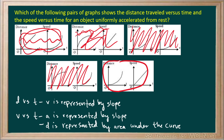On the distance versus time graph, we see a zero initial speed which gradually increases with time, showing an acceleration. And then on our speed versus time graph, we see a line with constant slope, indicating a constant acceleration. The speed is increasing as shown in the distance versus time graph. So this is the correct choice for this problem.